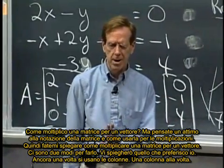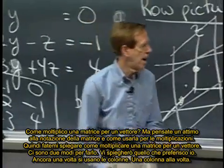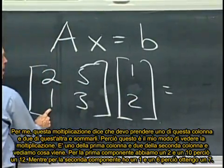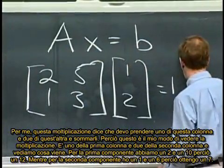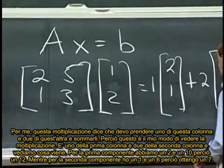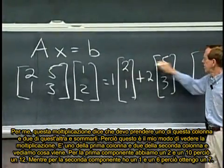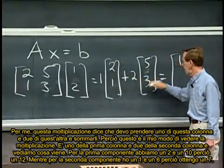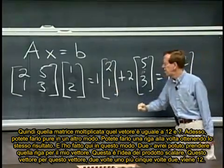So let me say how I multiply a matrix by a vector. Actually there are two ways to do it. Let me tell you my favorite way. It's columns again. It's a column at a time. For me that matrix, this matrix multiplication says I take one of that column and two of that column and add. So this is, in my, the way I would think of it, is one of the first column and two of the second column. So in the first component I'm getting a 2 and a 10, I'm getting a 12 there. In the second component I'm getting a 1 and a 6, I'm getting a 7. And so that matrix times that vector is 12, 7.